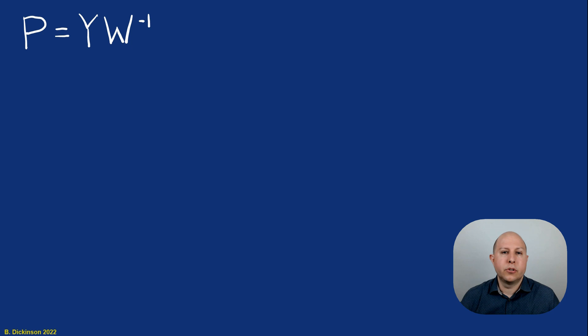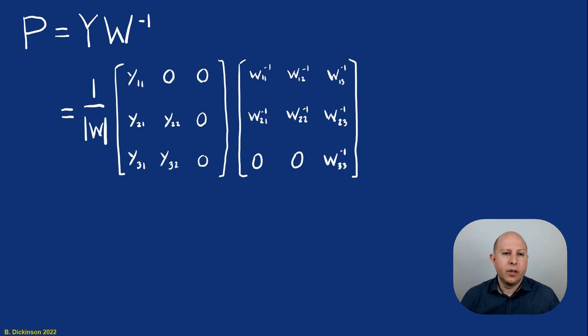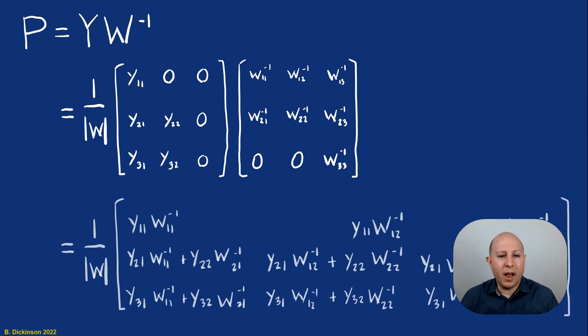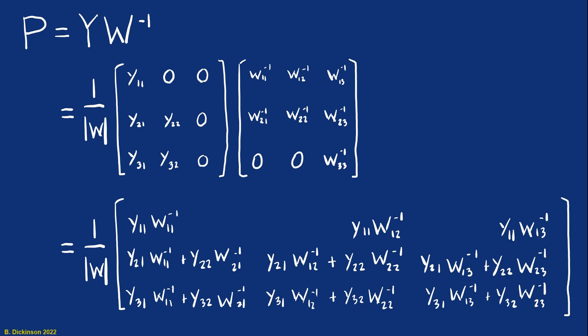Now going back to the solution to the Riccati equation, Y times W inverse. Notice that we have the zeros kind of identified since we did W inverse and we've previously done Y. So here's our solution P in general. But before we start to substitute in all of the elements, all of those polynomials for Y IJ, W inverse IJ, let's actually look at what's needed for the optimal control.